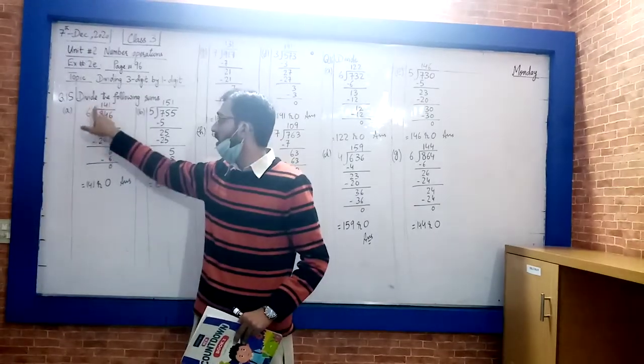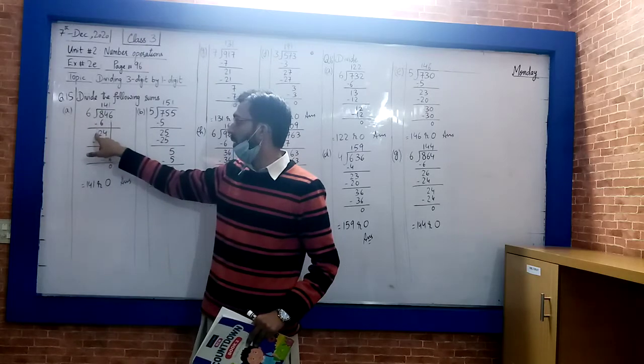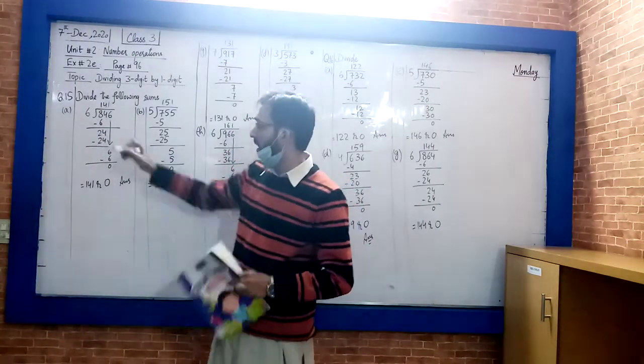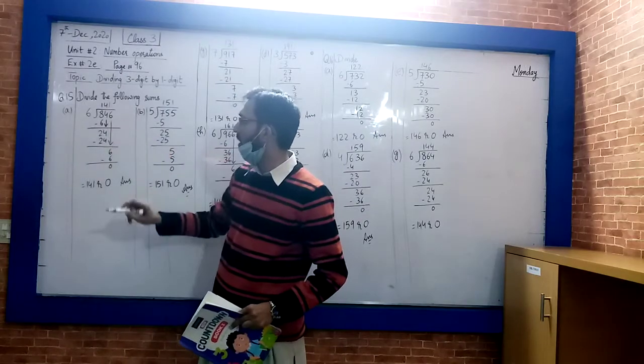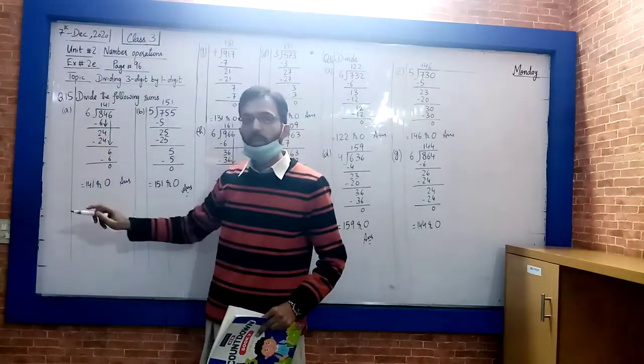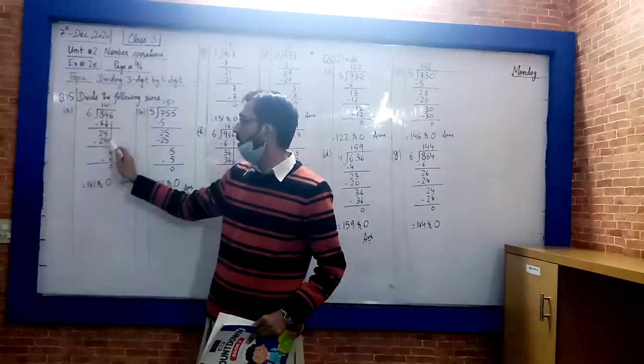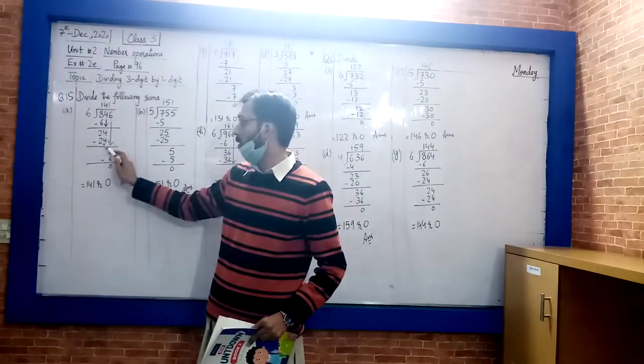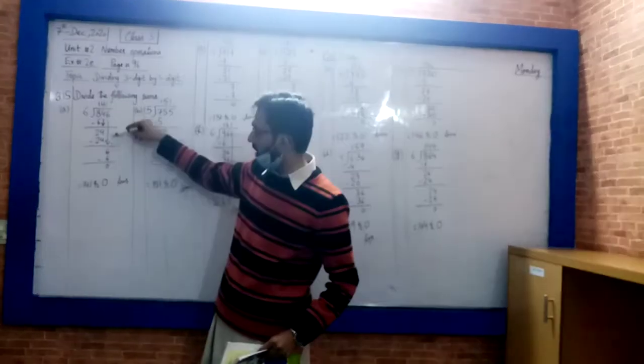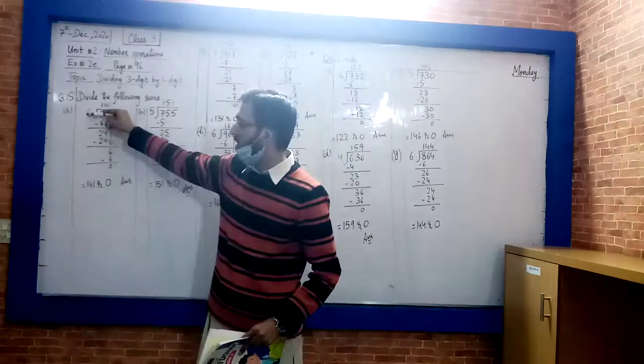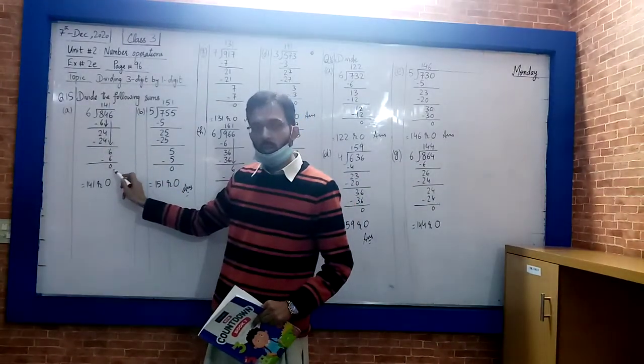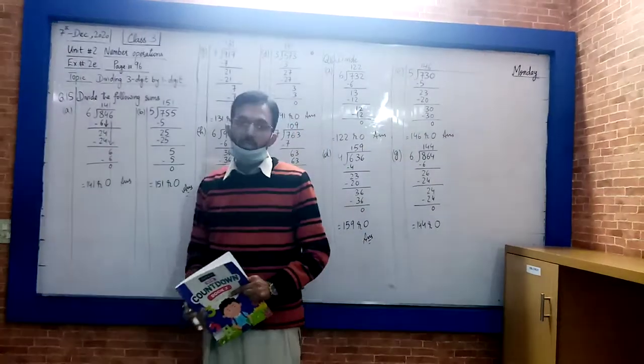8 divided by 6 is 1, times 6. Now 1 minus 6 is... 8 minus 6 is 2, and the next digit comes down to this position, which is 4. So the number is 24. 24 divided by 6 is 4. 6 times 4 is 24. Minus gives us 0.